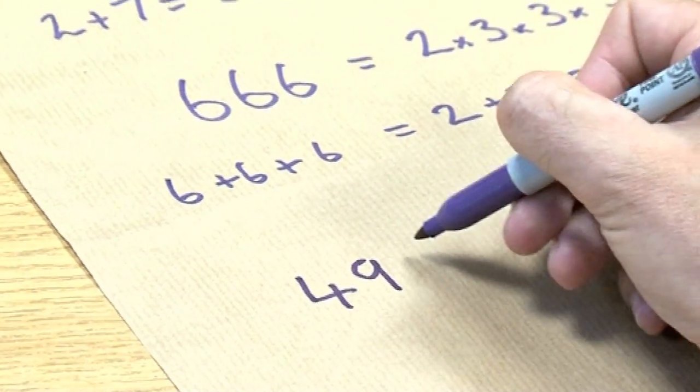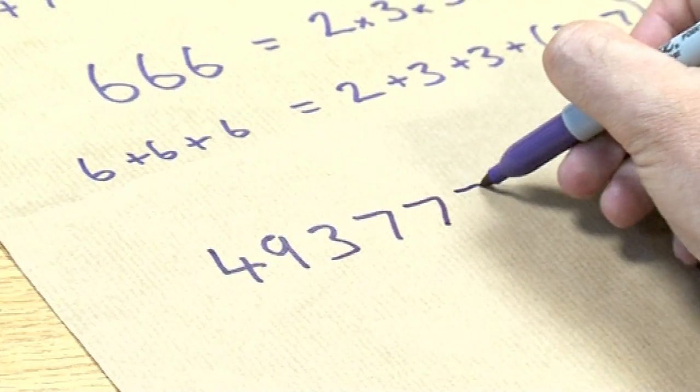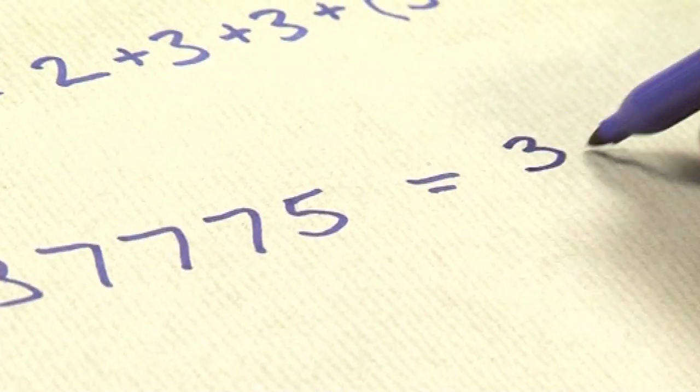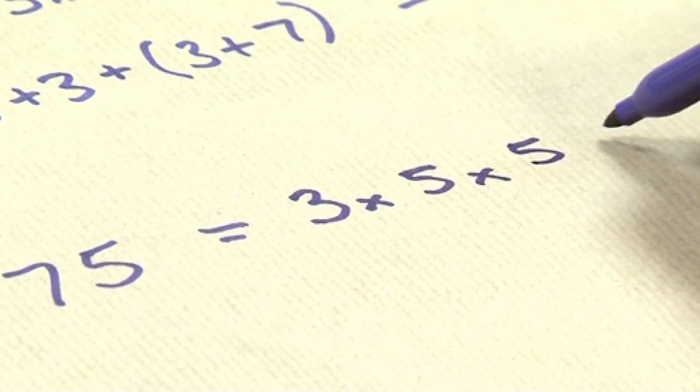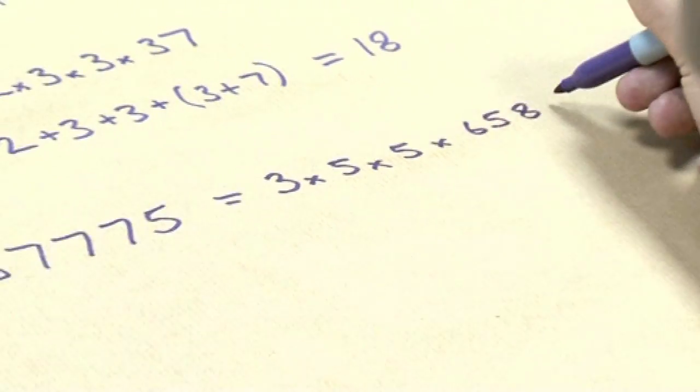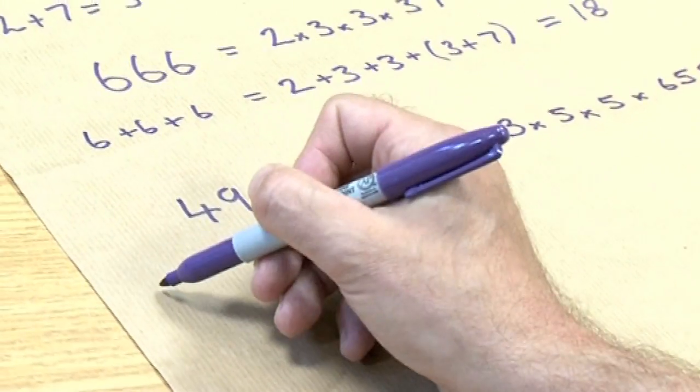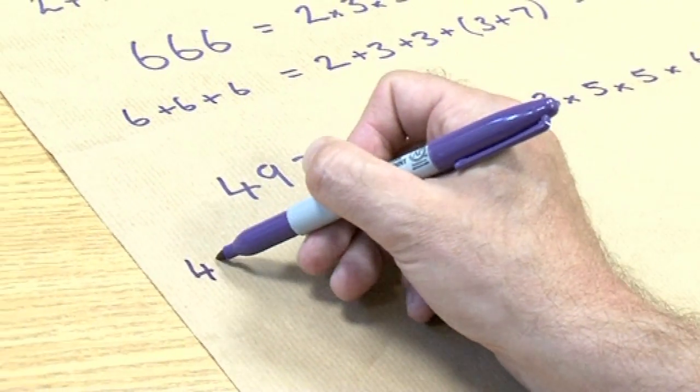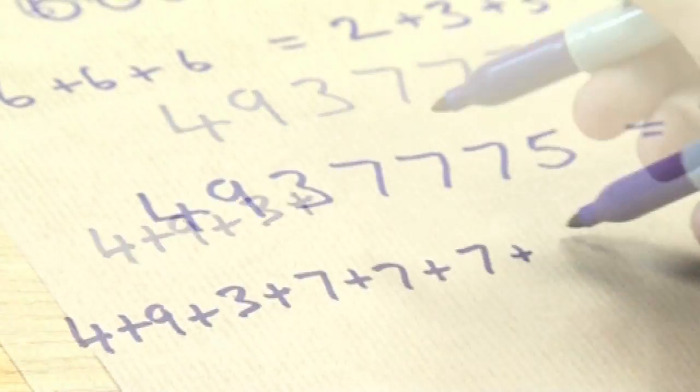Let's go to the original Smith number, and let's have a go at that one. What gets me is how he realized that this was going to work. First of all, get the prime factors, OK? Yeah. So it's 3 times 5 times 5 times 65,837. It's that bit that I really think is really neat. What we can do is add up the digits that make up the number, OK? 4 plus 9 plus 3 plus 7 plus 7 plus 7 plus 5.